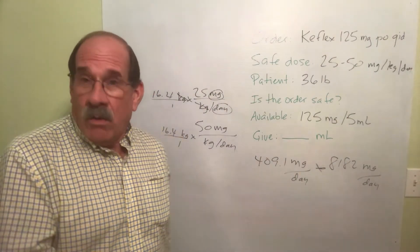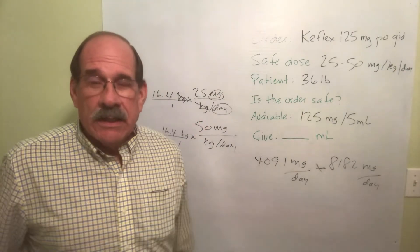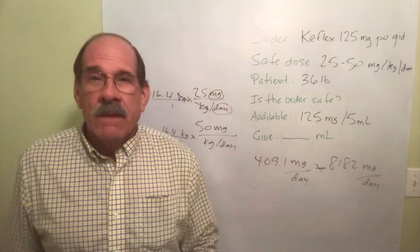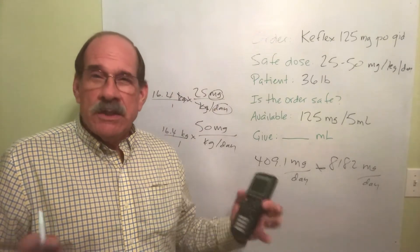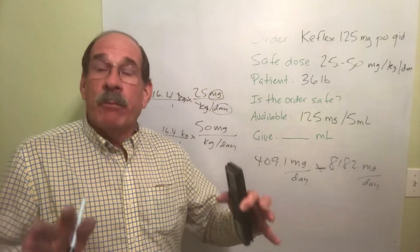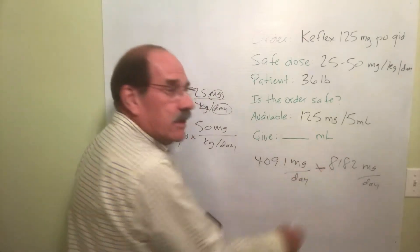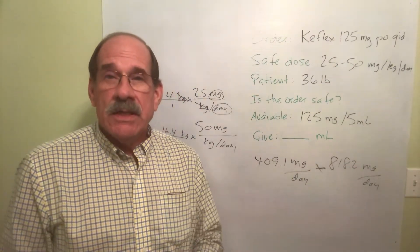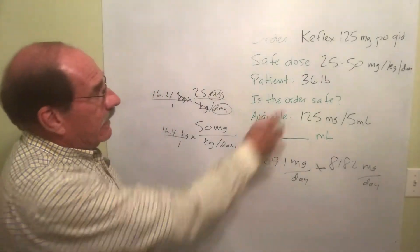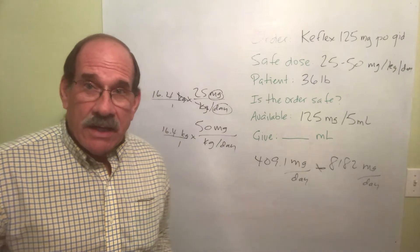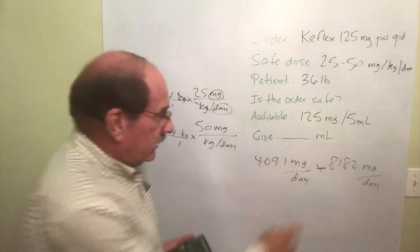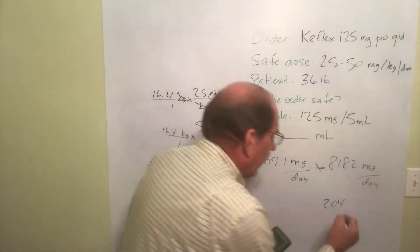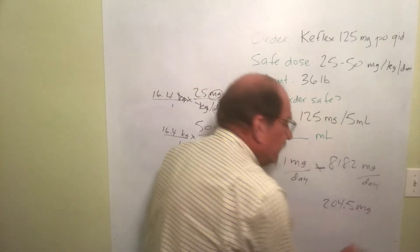If you're taking this class, the homework will ask a series of questions: what is the patient's weight in kilograms — 16.4; what's the safe range per 24 hours — between 409.1 and 818.2 milligrams per day. But what's the safe amount per dose? The order is QID — four times a day — so I divide each of those by four. Dividing the upper limit by four gives 204.5 milligrams per dose.